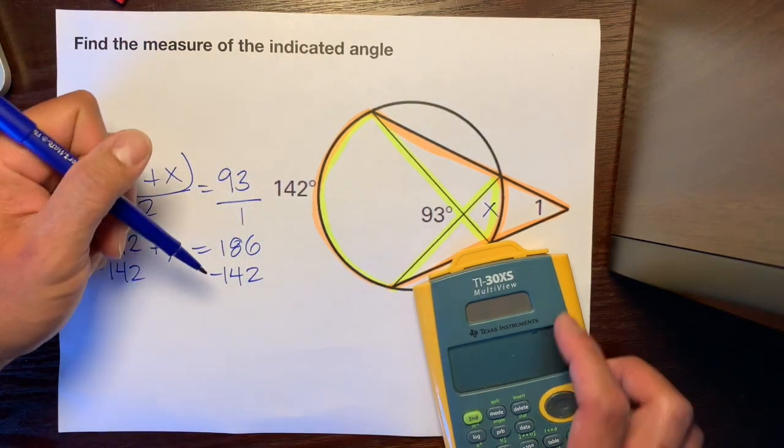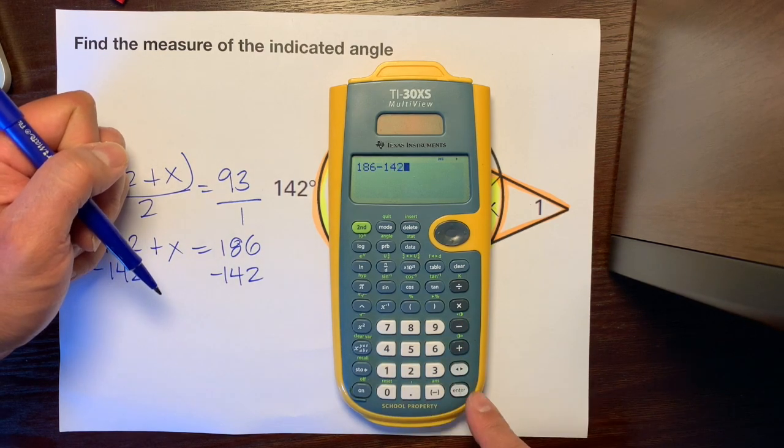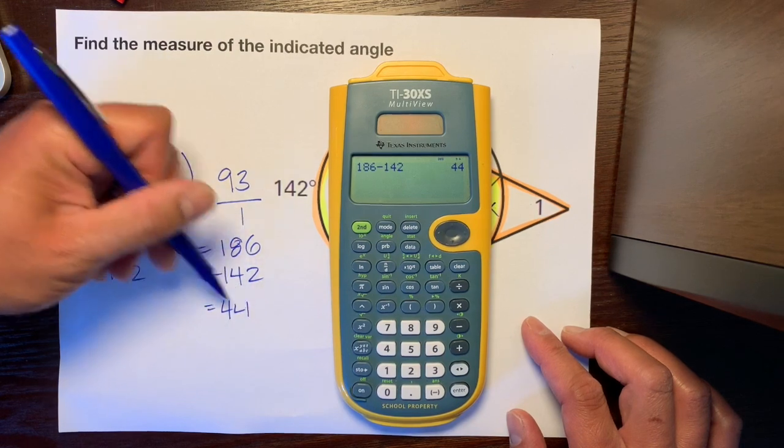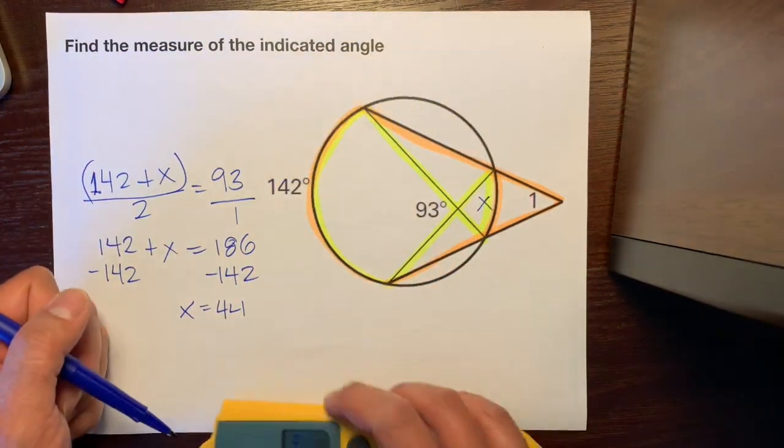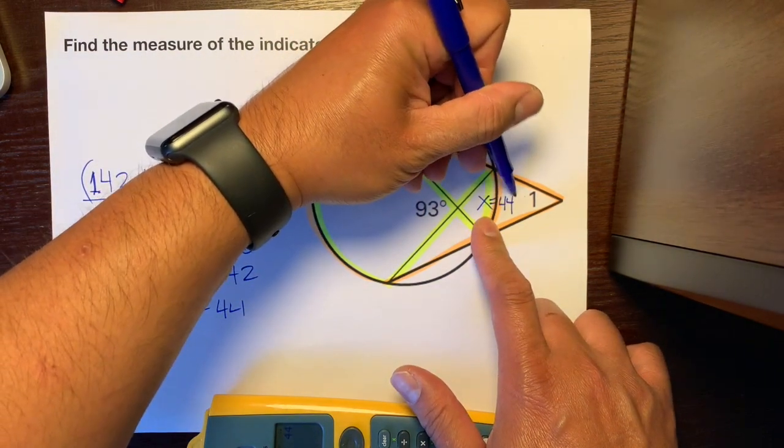Then what we're going to do is subtract this 142 from both sides. So 186, let's use our calculator just in case, 186 minus 142 is 44. So x is equal to 44. This arc is 44 degrees.